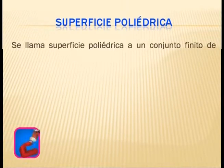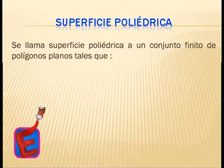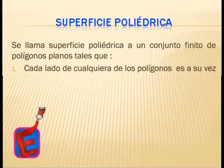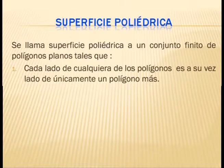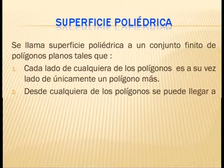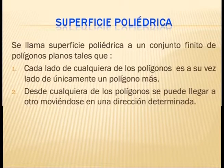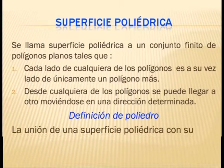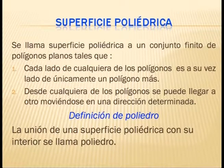Superficie poliédrica: se llama superficie poliédrica a un conjunto finito de polígonos planos tales que cada lado de cualquiera de los polígonos es, a su vez, lado de únicamente un polígono más. Desde cualquiera de los polígonos se puede llegar a otro moviéndose en una dirección determinada. La unión de una superficie poliédrica con su interior se llama poliedro.